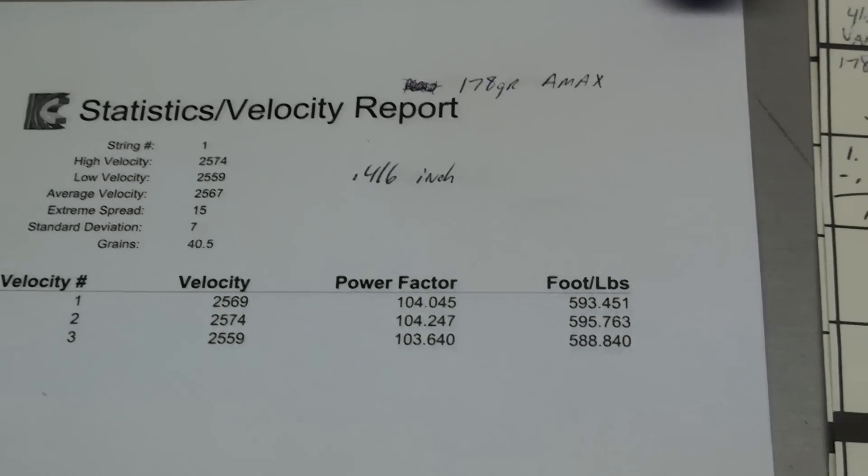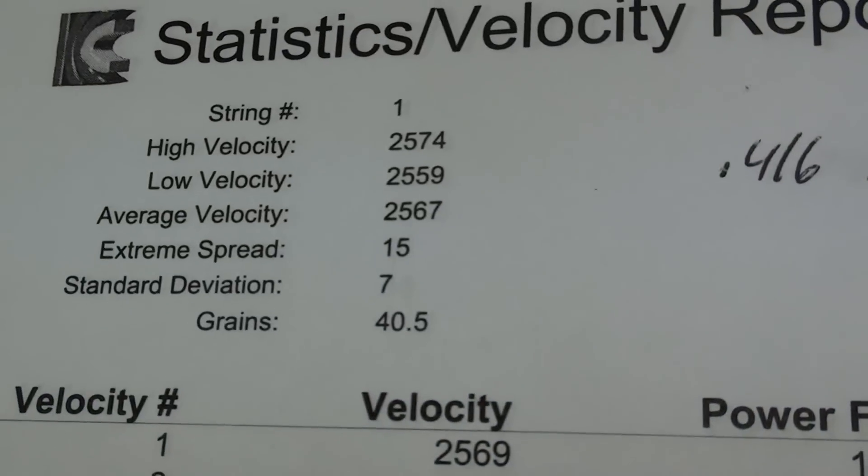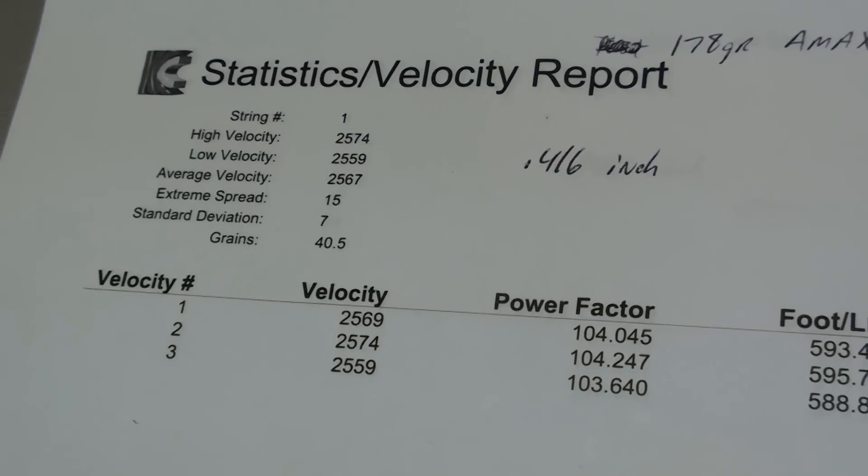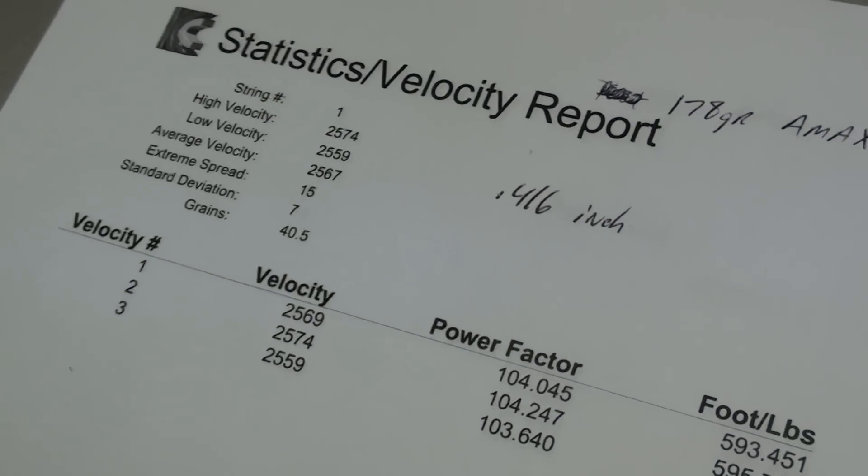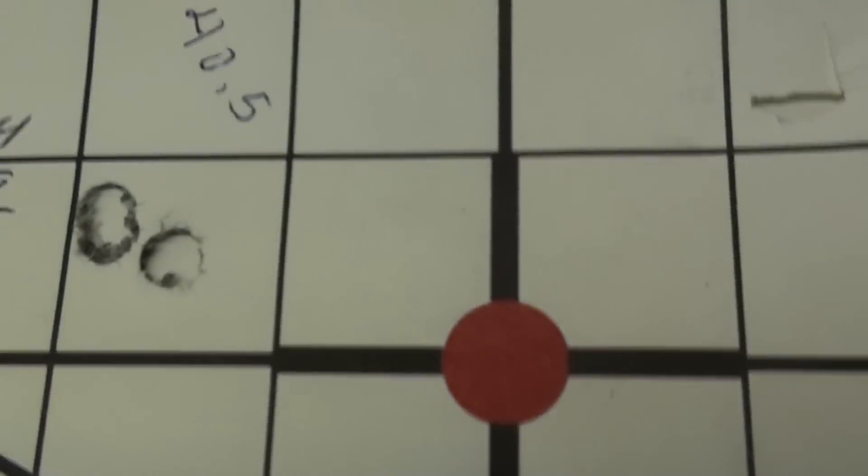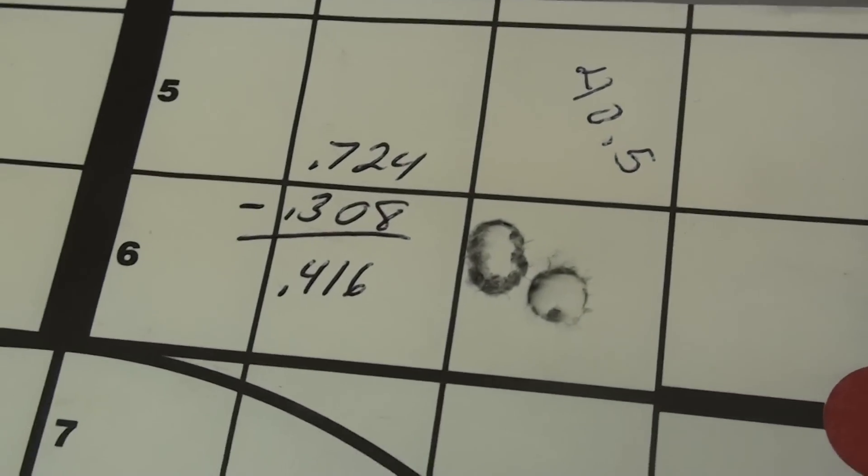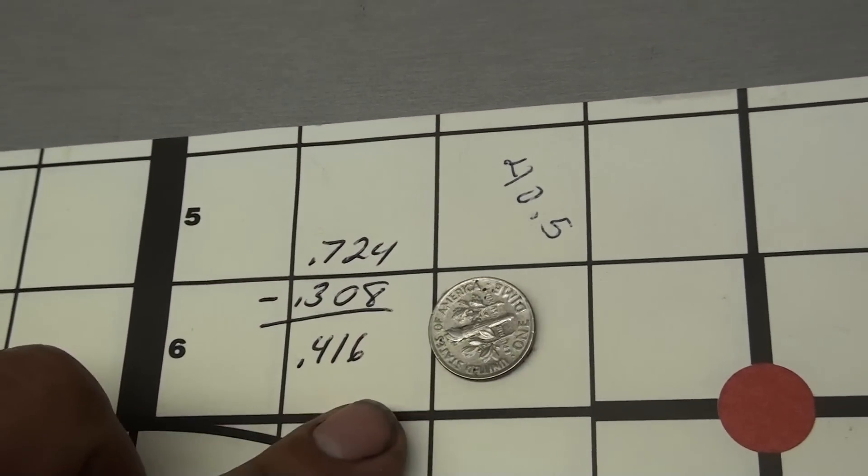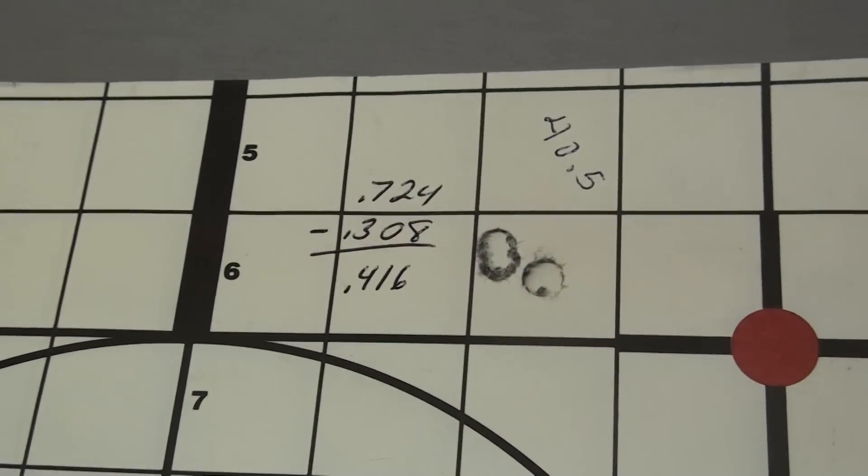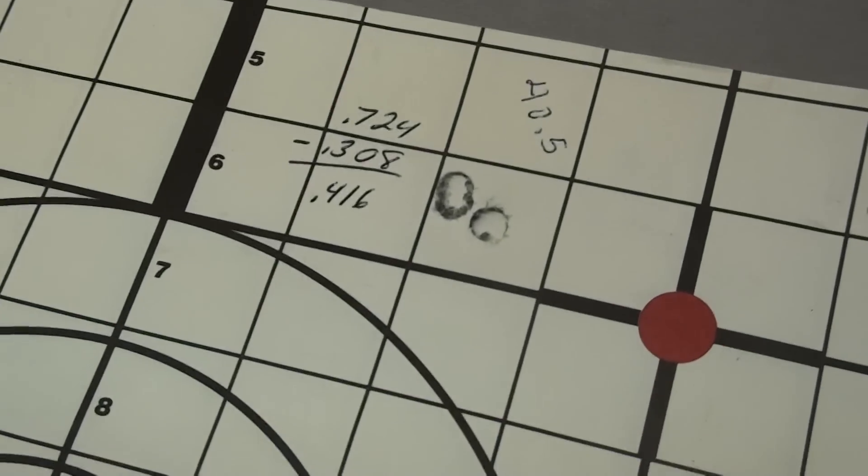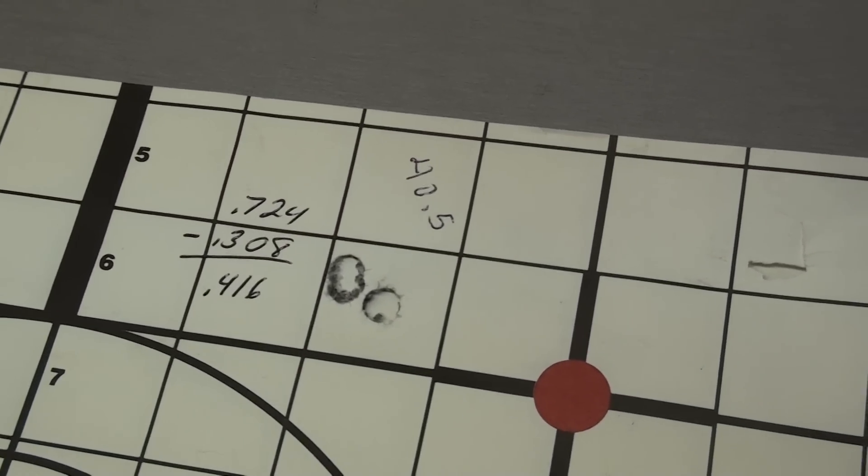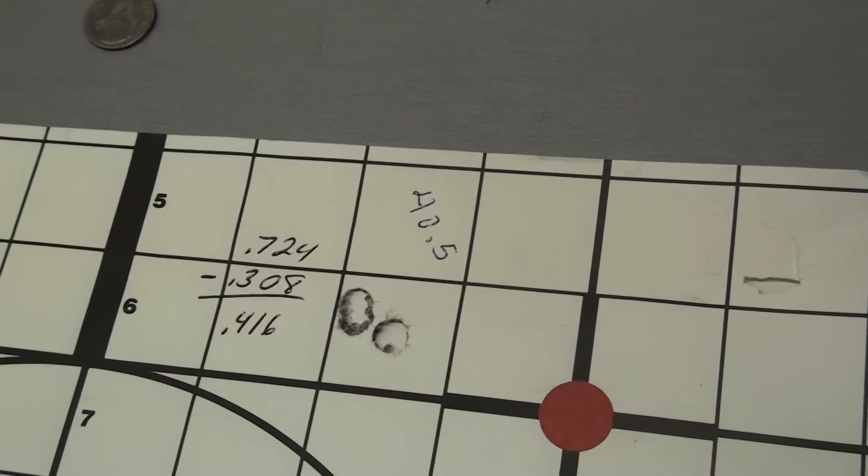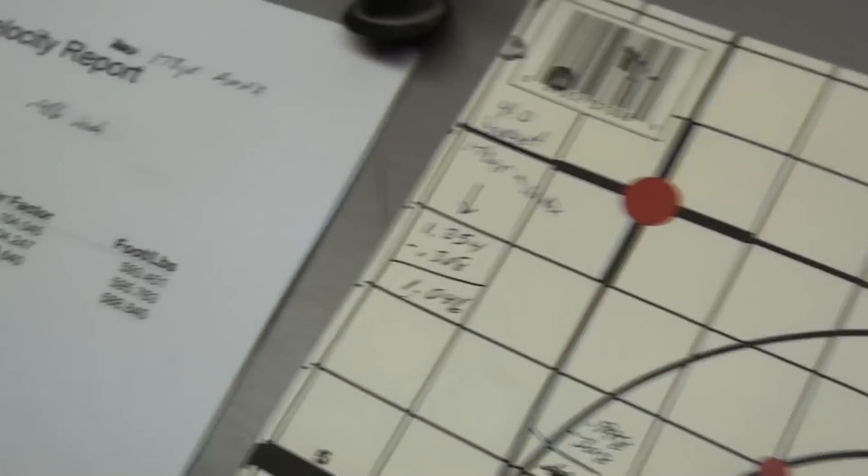Here is 40.5. You can see the extreme spread 15, standard deviation 7. Just by 0.5 grains jumped it up about 60-67 feet per second and I got a group of half MOA. Just under a dime, so pretty sweet. I loaded about 60 of them at 40.5 and I consistently got groups under half inch at 100 yards. That's a pretty nice group right there.